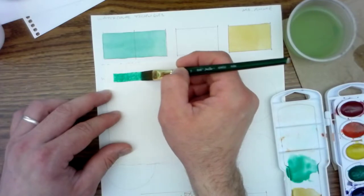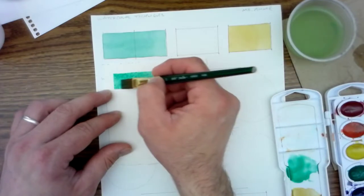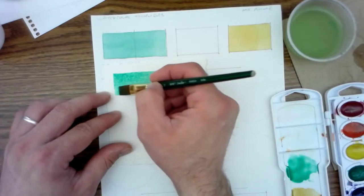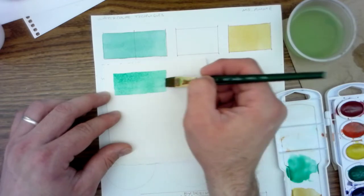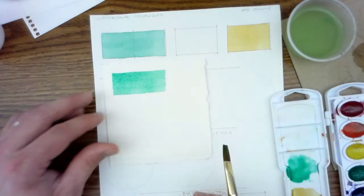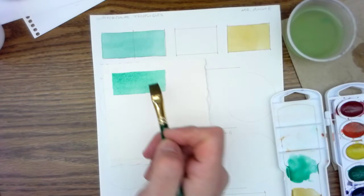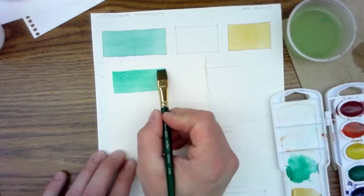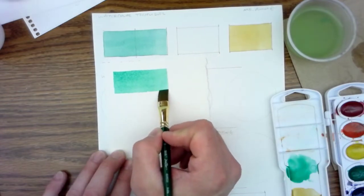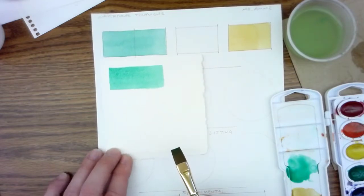You're going to see a much different outcome because the thickness, the rigidity of the paper, really allows for the paper to absorb the pigment that much better. It's going to dry a little bit darker, and you can see the difference already.